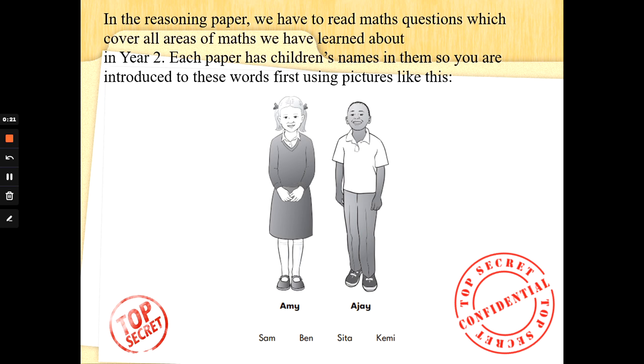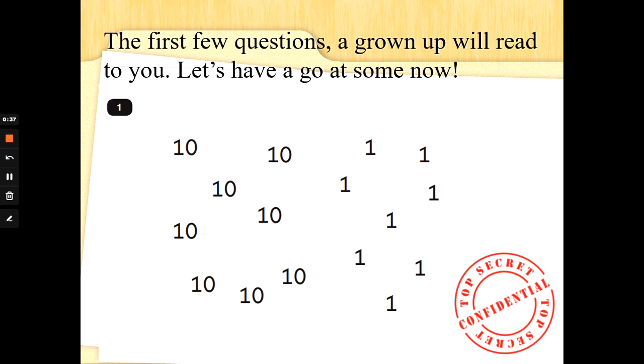Each paper has children's names in them so you are introduced to these words first using pictures like this. The little girl is called Amy, the little boy is called AJ and you might also see Sam, Ben, Sita and Kemi. They're not maths words, they are people's names. The first few questions a grown-up will read to you. Let's have a go at some now.